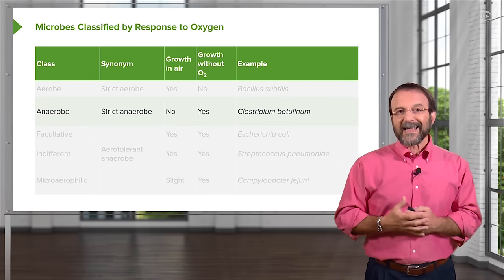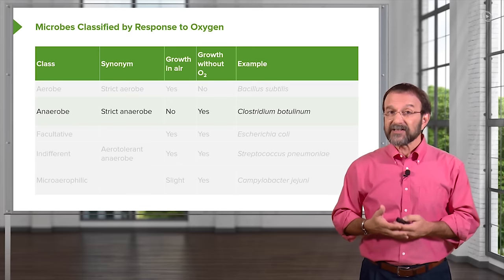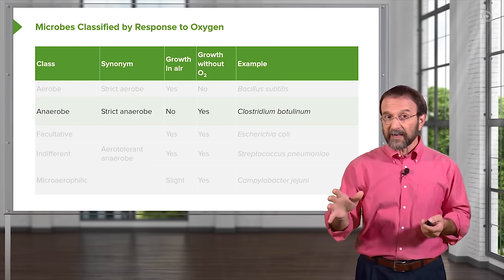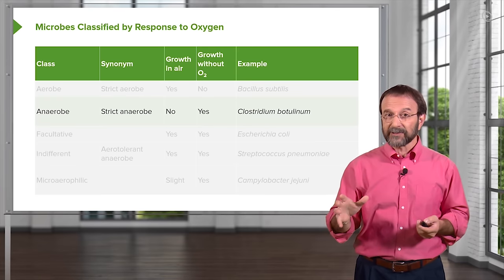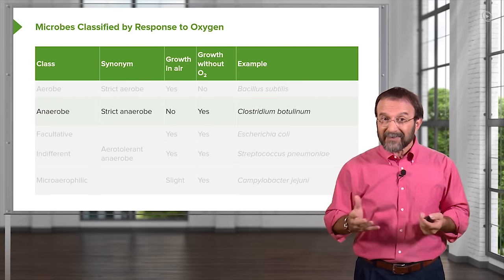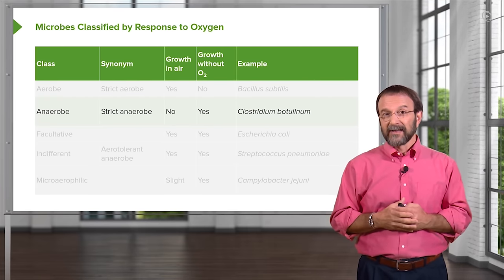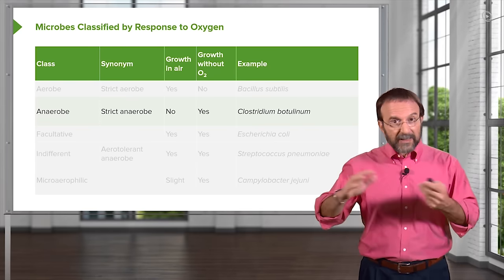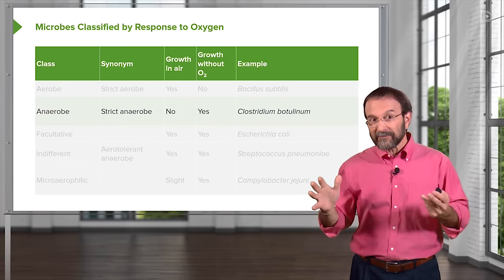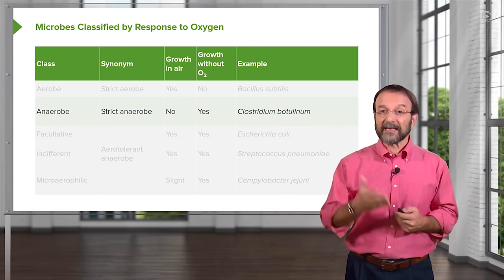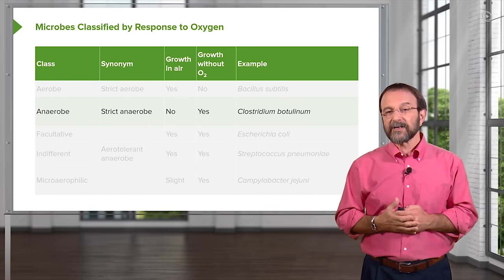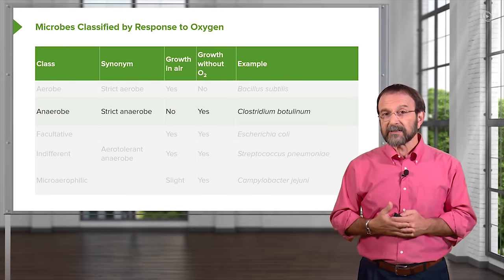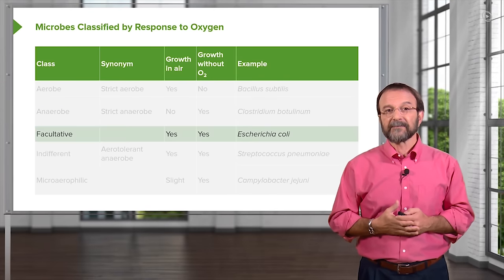Another class is the anaerobe, also known as the strict anaerobe. It will not grow in air. If you want to grow these bacteria in the laboratory, you have to grow them in a vacuum without air. They will grow without oxygen — they don't need it, and in fact it's bad for them to have it. An example is Clostridium botulinum, a bacterium that makes a very potent toxin, botulism toxin.